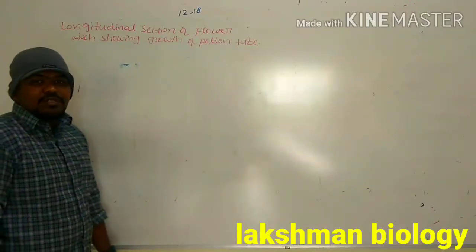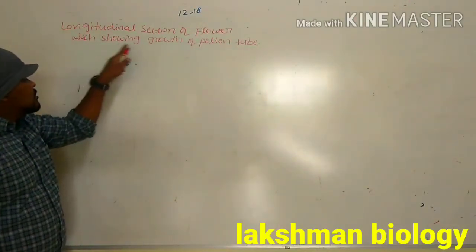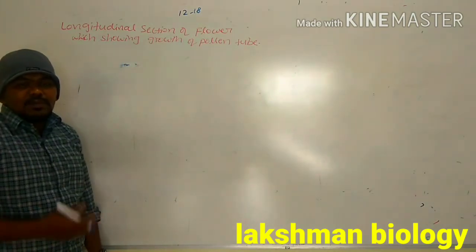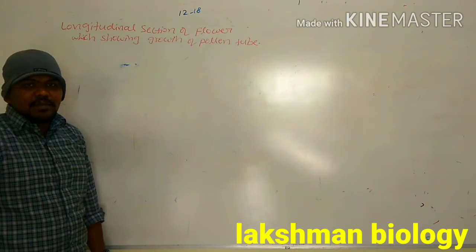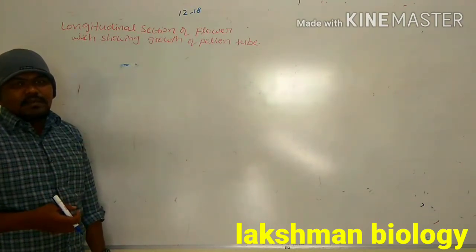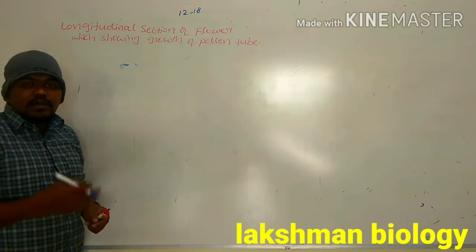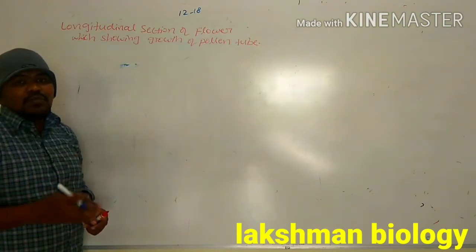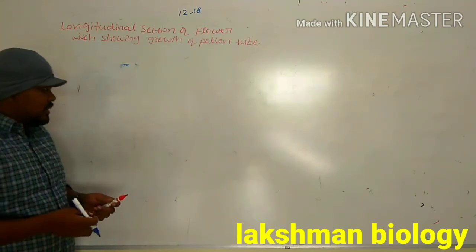How to draw the longitudinal section of the flower which shows the growth of pollen tube. Pollen grains land on the stigma after pollination, then they will germinate. We have to learn how to draw the sectional view of the flower which shows the growth of pollen tube.